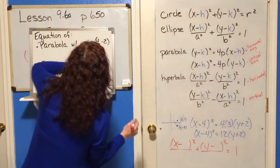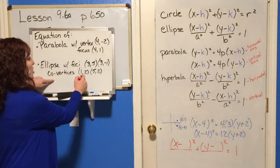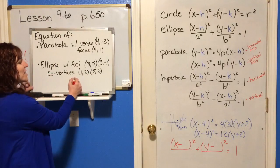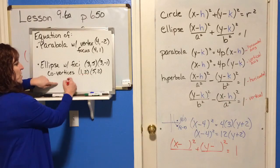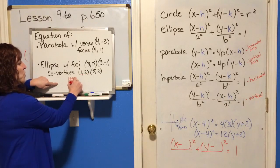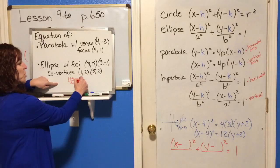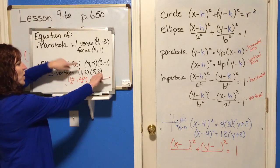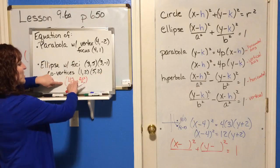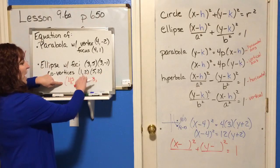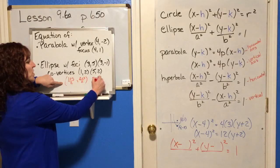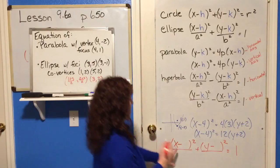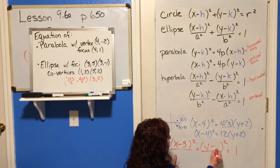Let's find the center between the co-vertices. You add the X's and divide by 2, and add the Y's and divide by 2. So 1 plus 5 divided by 2 is 3, and 2 plus 2 divided by 2 is 2. The center is 3, 2. Put in X minus 3 and Y minus 2.